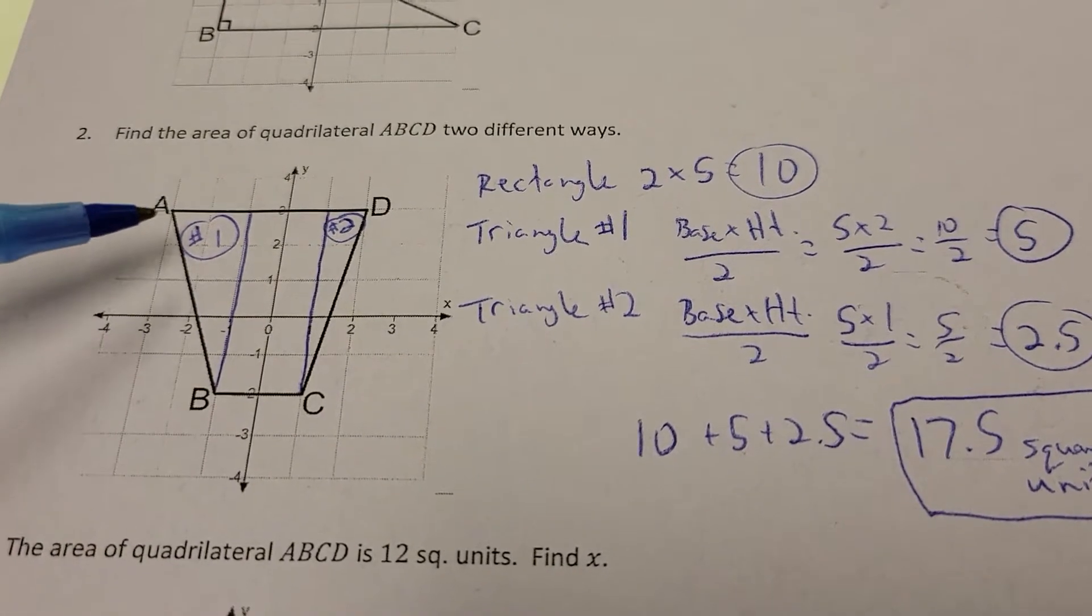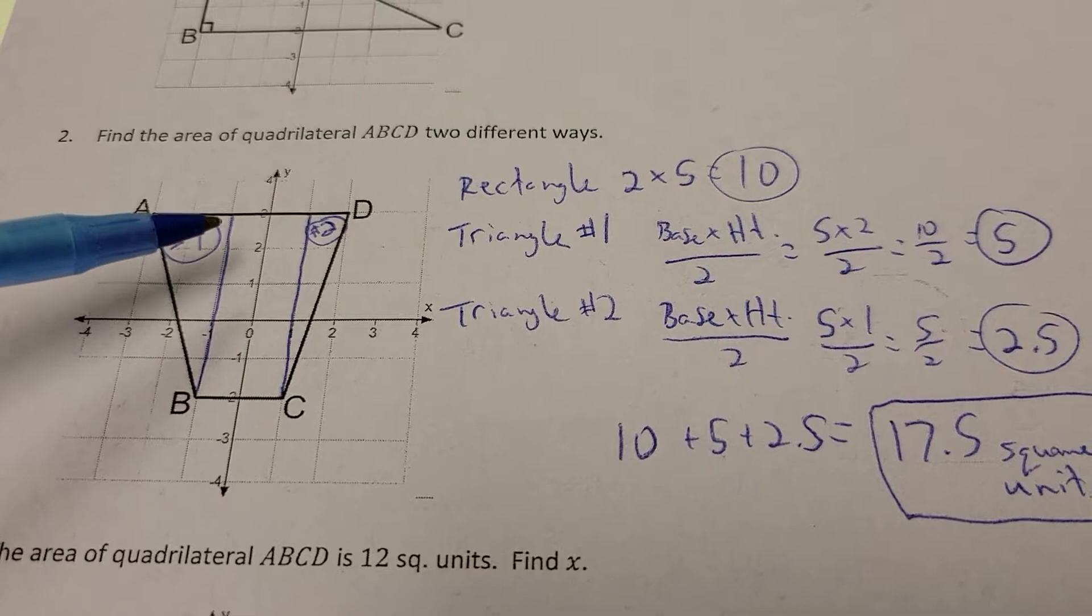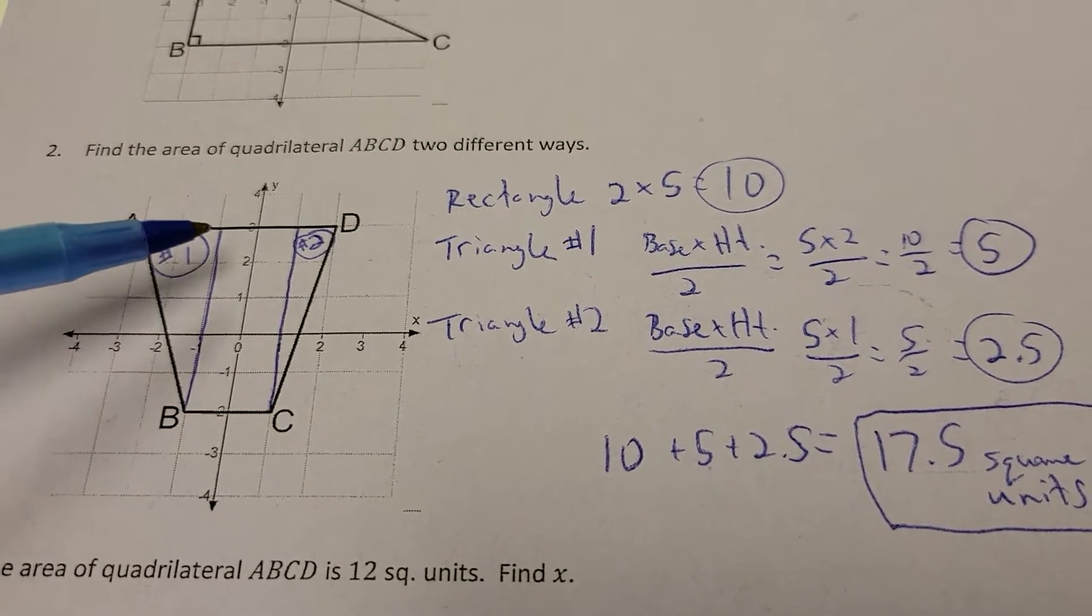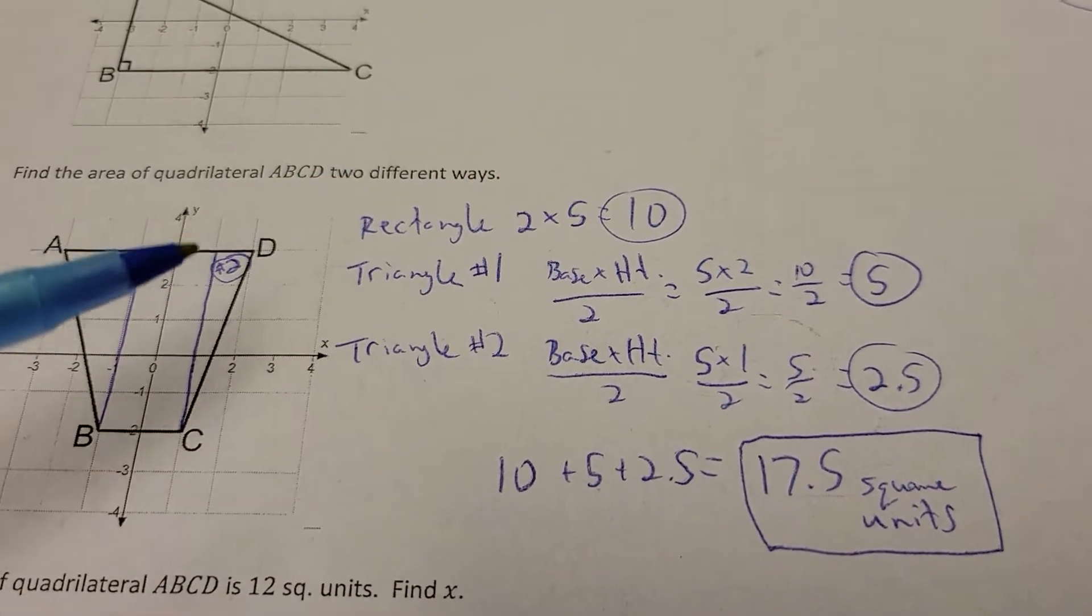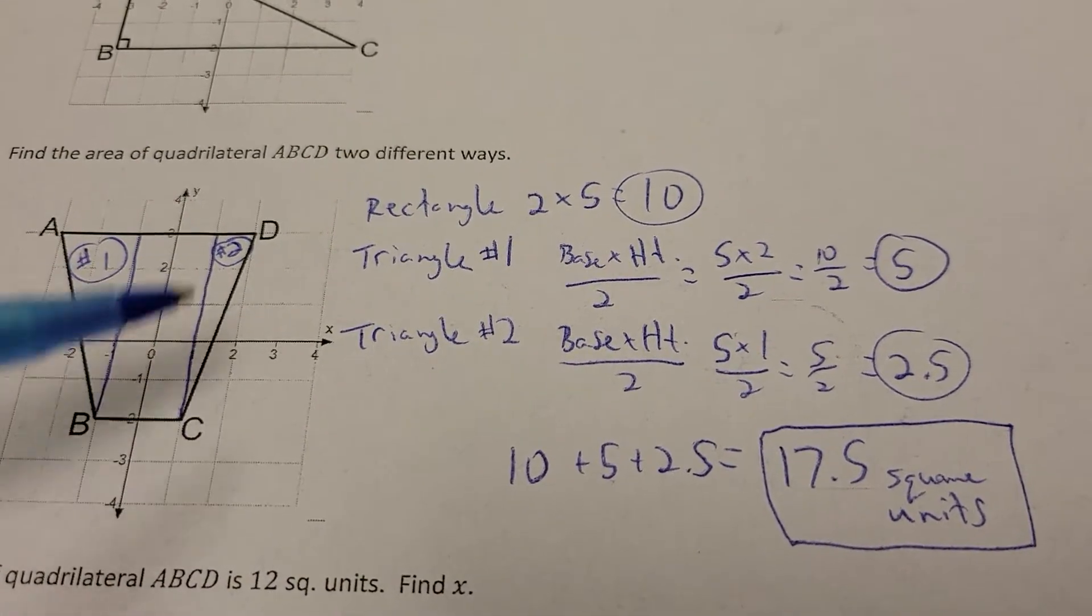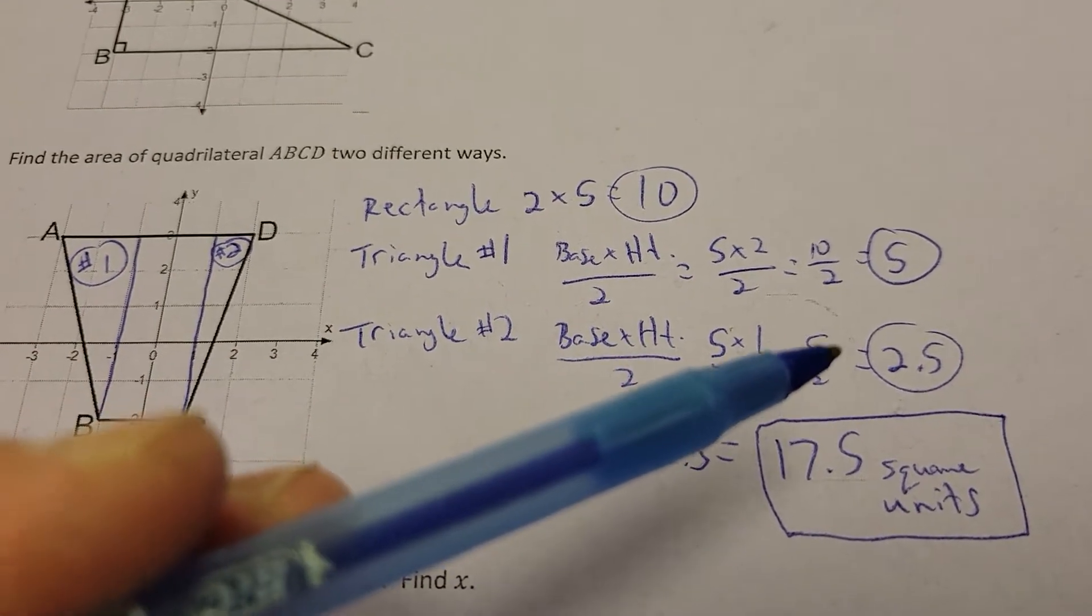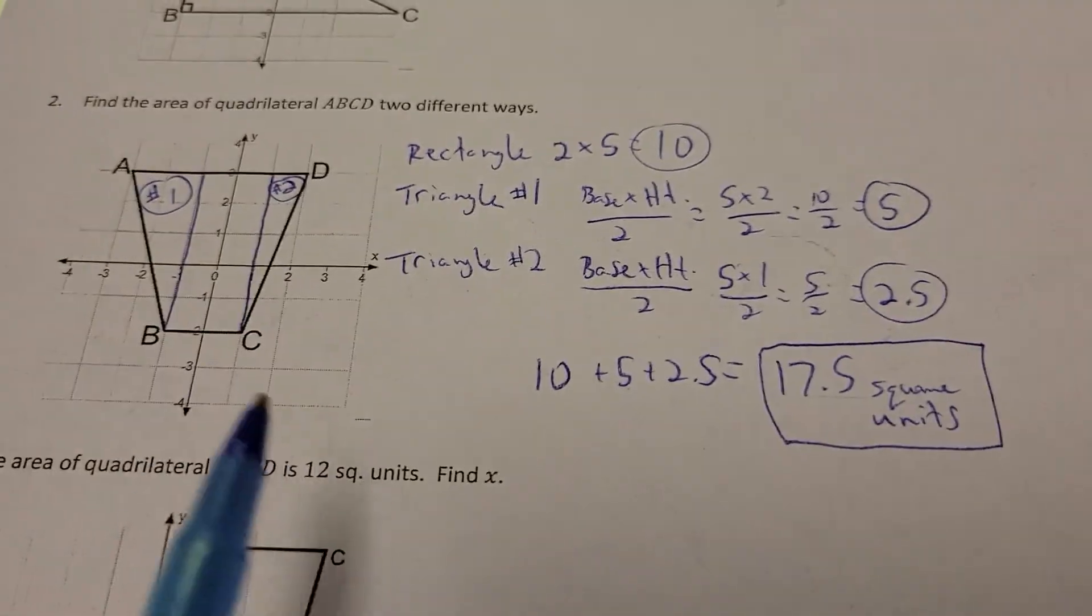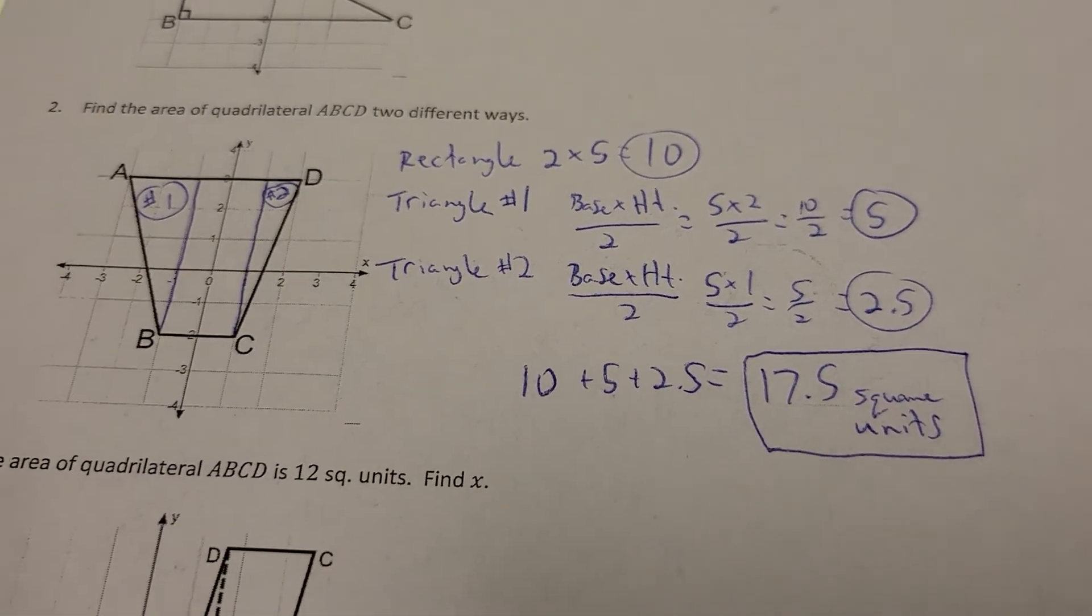The triangle number 1, let's see, has a base and a height here. So I have 5 for my height. Base is going to be 2. So 5 times 2 divided by 2 gives me 5. And this one has a height of 5 and a base of 1. So 5 times 1 divided by 2 gives me 2.5. So then I add up the rectangle and the two triangles all together and get 17.5 square units.